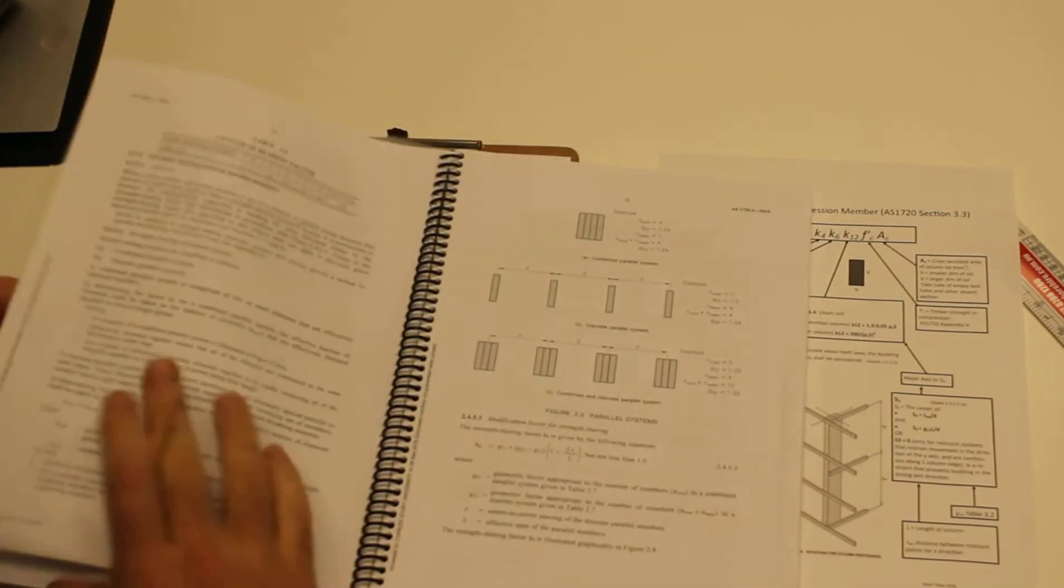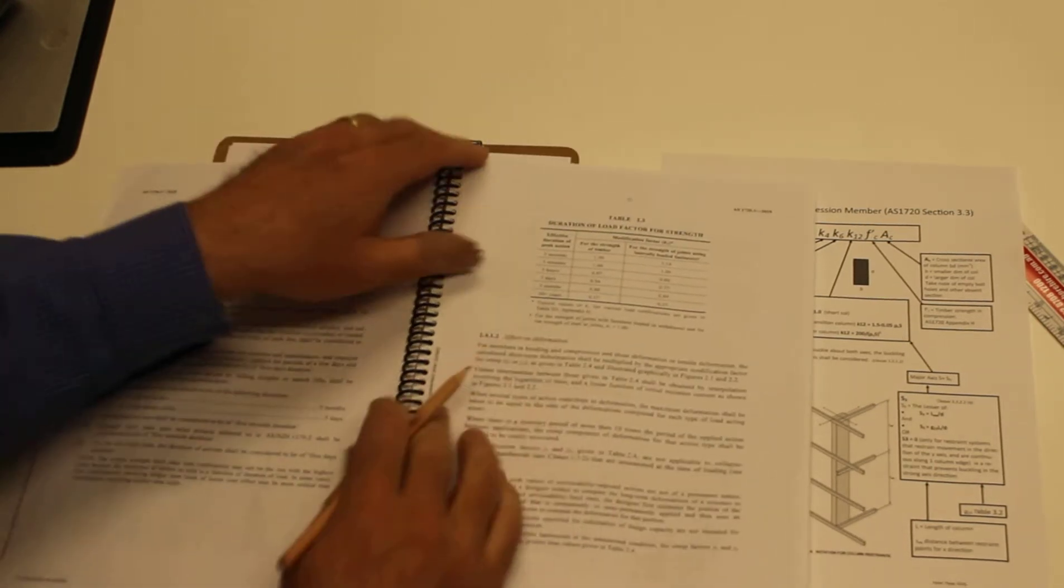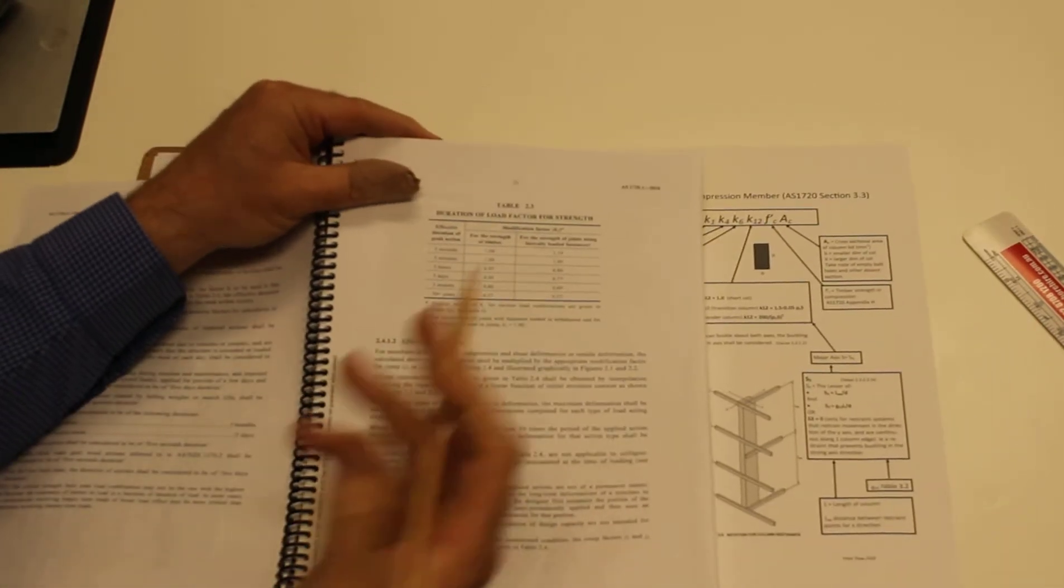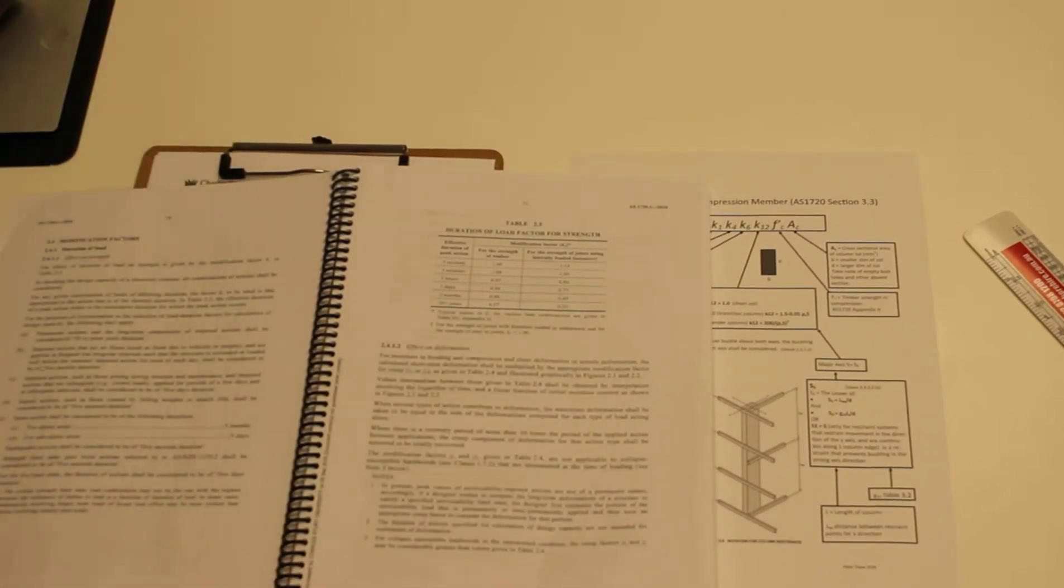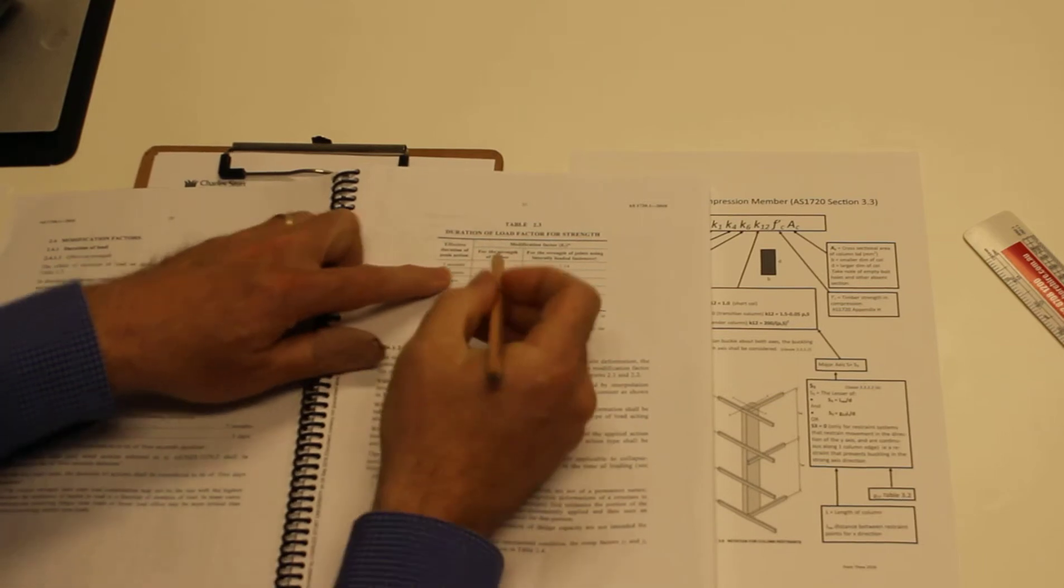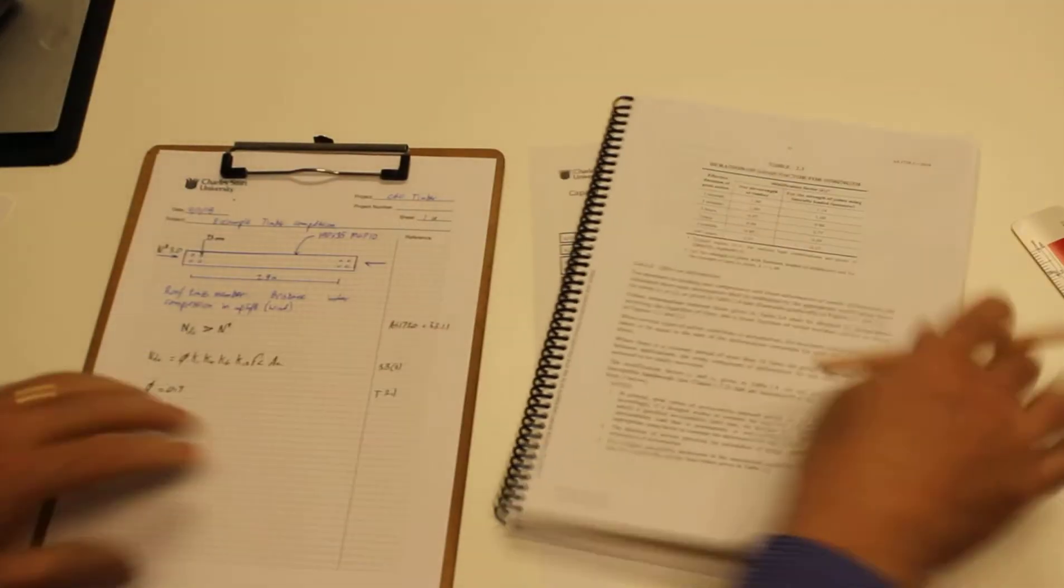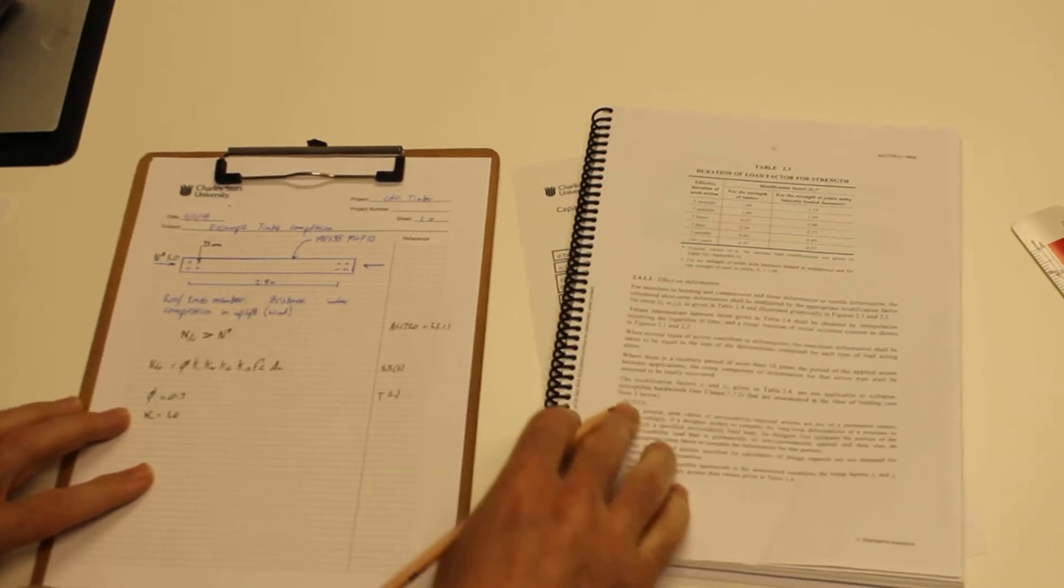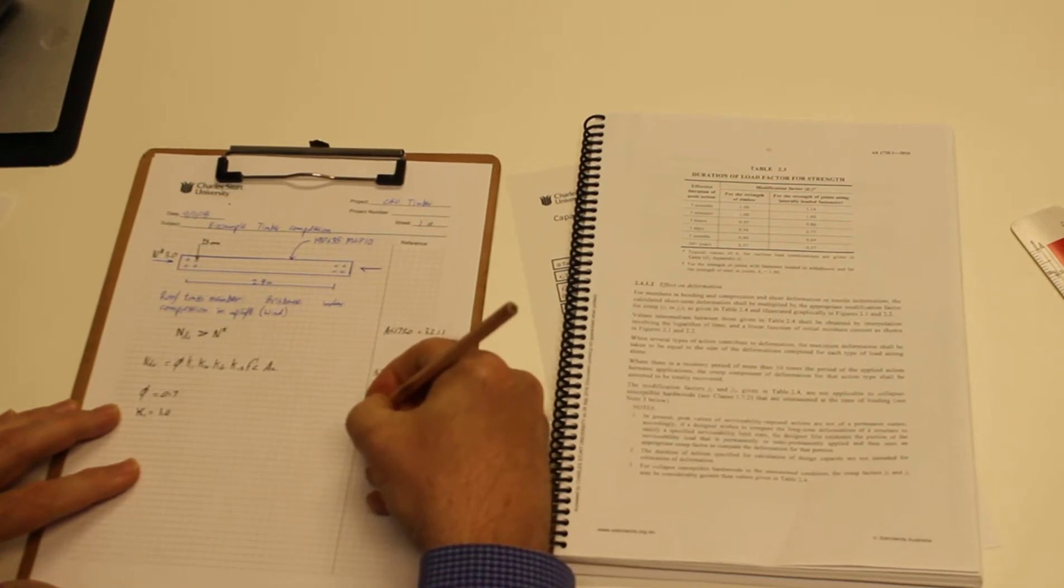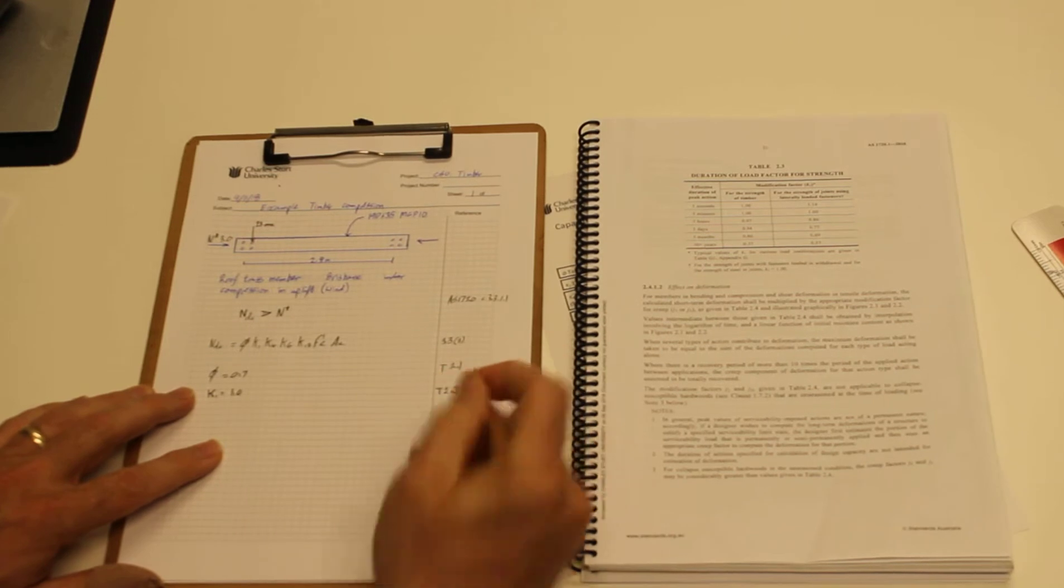Now k1 factor, just a bit further. We know that the k1 factor, because this is a member loaded mostly with wind, so wind in uplift, it's only a very short duration, actually five seconds. So the k1 factor is going to be 1.0. K1 equals 1.0. The downforce calculation might be a little bit more complicated, but in this particular example it's quite easy. That's table 2.3.